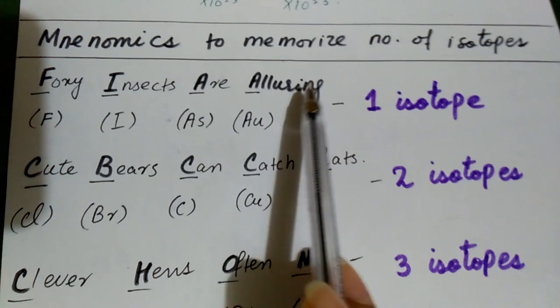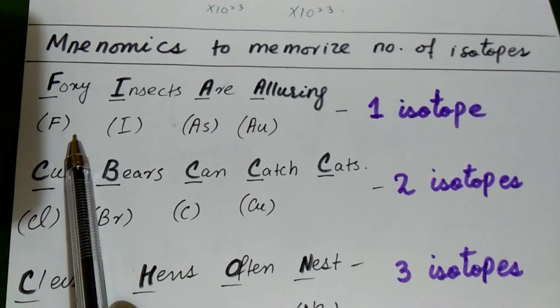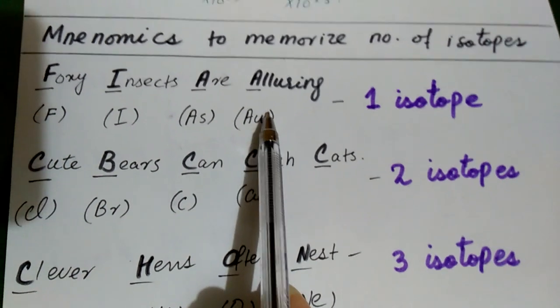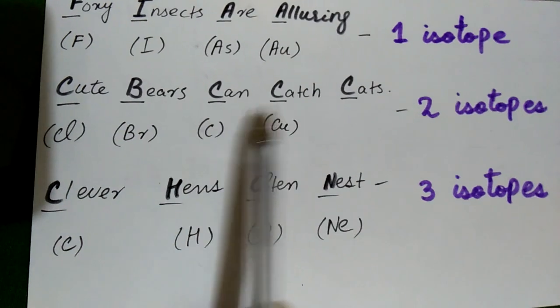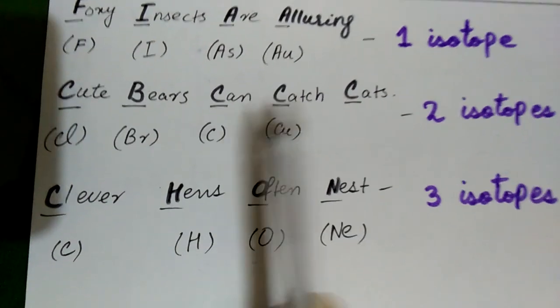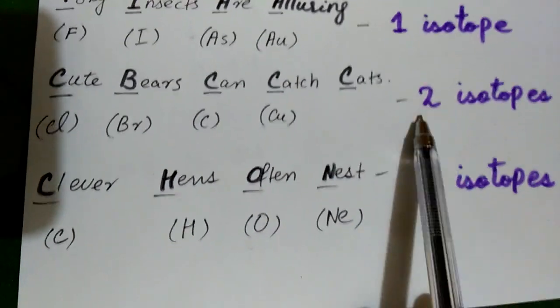Foxy insects are alluring. What does FC represent here? Fluorine, iodine, acetate and gold. In this way, these are cute bears can catch the cats. These are the names of their respective elements. And in number 2, it says that all of them are two isotopes.